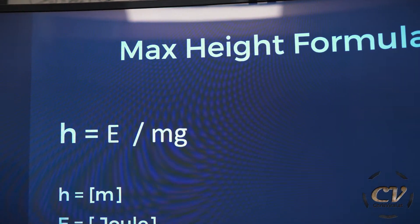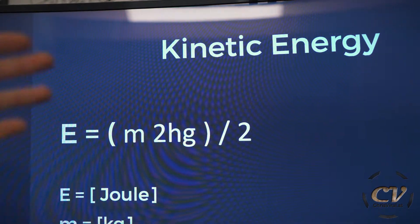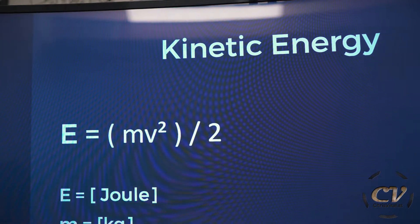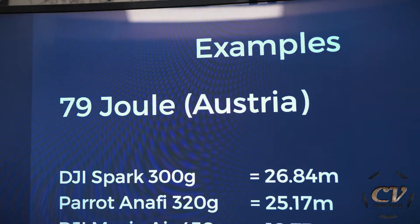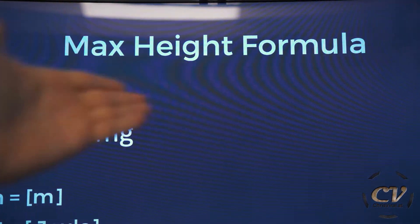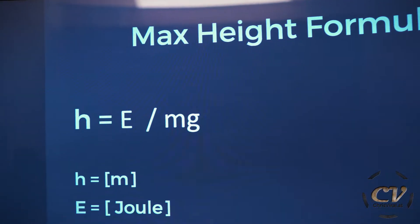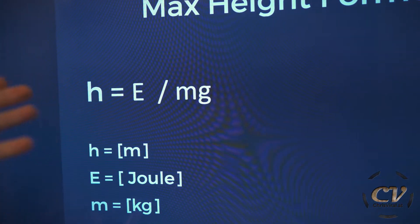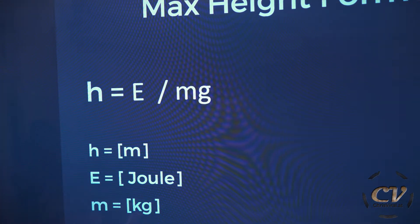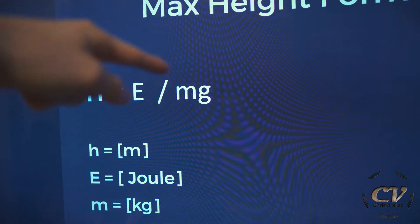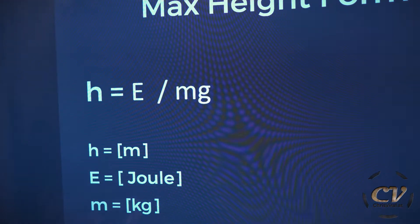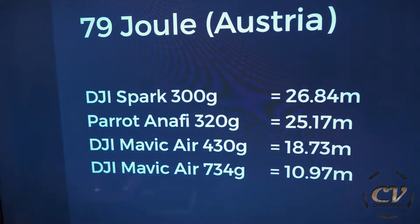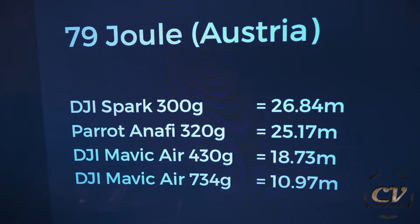Let's move on to the max height formula. After quite a bit of math, I took the kinetic energy formula and derived the max height. I'm stupid, but I made it work. So this is the max height formula — height equals Energy divided by mass times g. It's so easy, like this is such a simple, amazingly simple formula. Energy divided by mass times g. I love it.